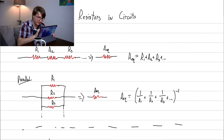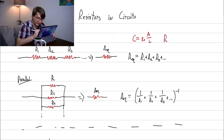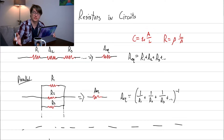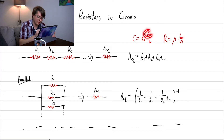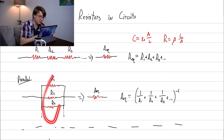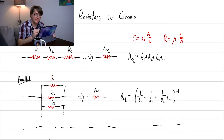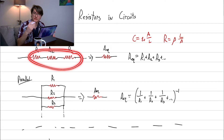Recall how we calculated capacitance: epsilon naught times cross-sectional area over length. Resistance is r equals resistivity times length over area. Notice how these get flipped — instead of area over length, it's length over area. To increase capacitance you increase cross-sectional area, which is done by adding things in parallel. For resistors, you increase resistance by increasing length, which is what adding in series does.